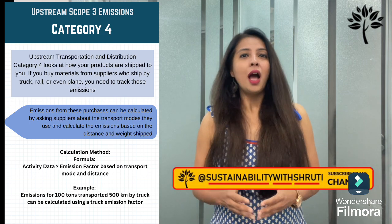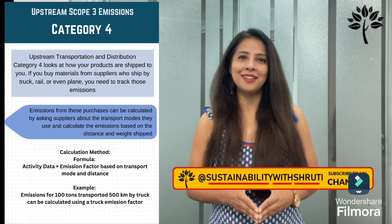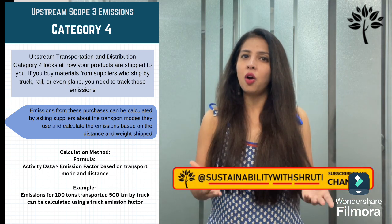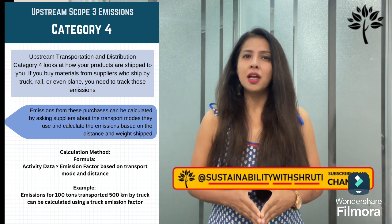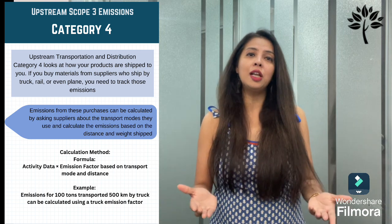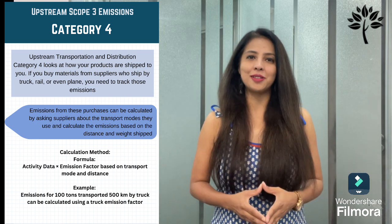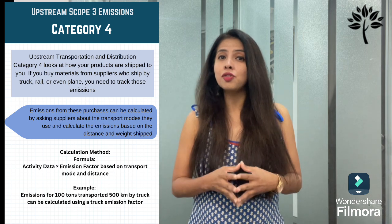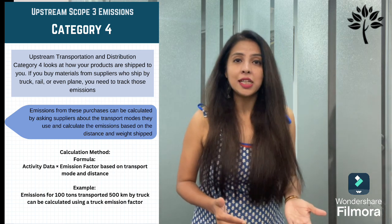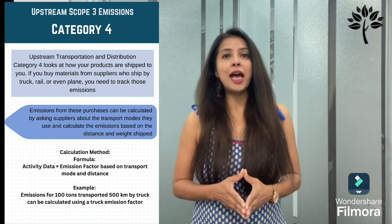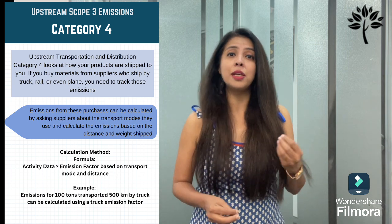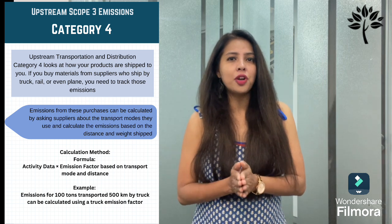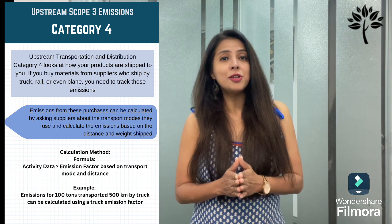Category 4 is upstream transportation and distribution — how your products are shipped to you. If suppliers ship by truck, rail, or plane, you need to track those emissions. Ask suppliers about transport modes and calculate emissions based on distance and weight shipped. The calculation method is: activity data × emission factor based on transport mode and distance. Activity data includes weight of goods, transport distance, and mode. For example, emissions for 100 tons transported 500 km by truck can be measured using a truck emission factor.